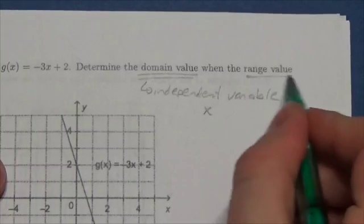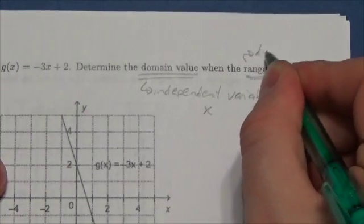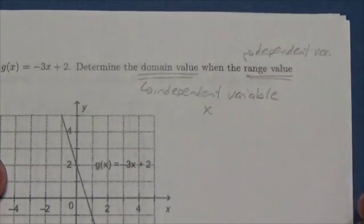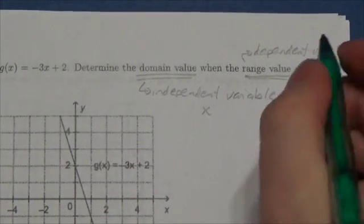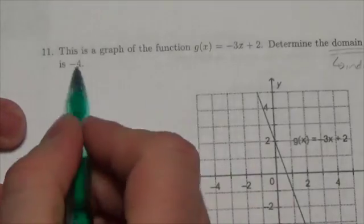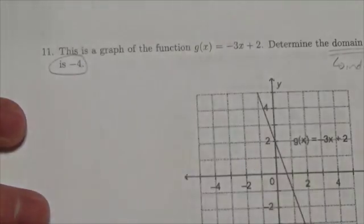The range value here is going to be the dependent variable. And in most cases, that's going to be y. So in this case here, I'm asking, what is x when y is equal to negative 4?